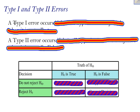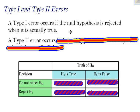So here we go. A type 1 error occurs if the null hypothesis is rejected when it is actually true. So if the null hypothesis is true, but you reject it, that is called a type 1 error.